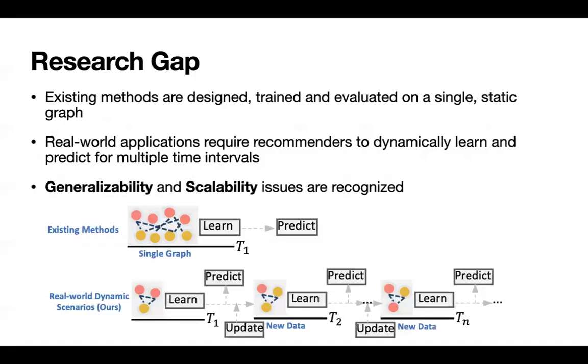To start with, in this paper we focus on the research gap between existing methods and real-world scenarios. While existing state-of-the-art methods are designed, trained and evaluated on a single static graph, we actually require recommenders to dynamically learn and predict for multiple time intervals in production. To mitigate the gap between industry and the recommender system research community, the generalizability and scalability issues of recommenders under dynamic environment remain to be solved.